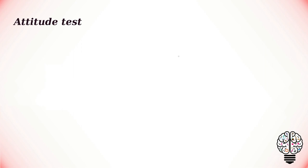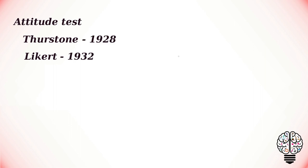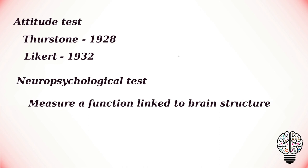Attitude tests are used to measure an individual's reaction towards a certain event, object, or towards another person. Usually a Likert scale or a Thurston scale will be used to measure these types of tests. The Thurston scale was developed by Leon Thurston in 1928 and was first used to measure attitude towards religion, but later found application in sociology and psychology. Four years later, the Likert scale was developed to simplify the original Thurston scale and make it more reliable.